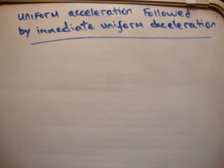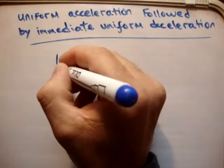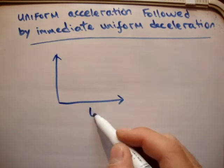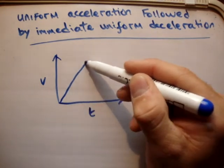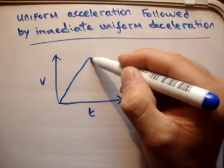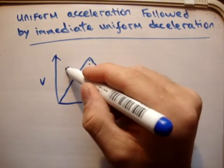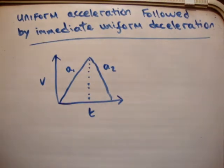In this video I'm going to show you a little trick. This trick relates to uniform acceleration followed by immediate uniform deceleration. If you're plotting a velocity versus time graph, something accelerates and then immediately decelerates, giving a triangular shape. We'll call the accelerations a1 and a2, and there's an easy way of analyzing this motion.